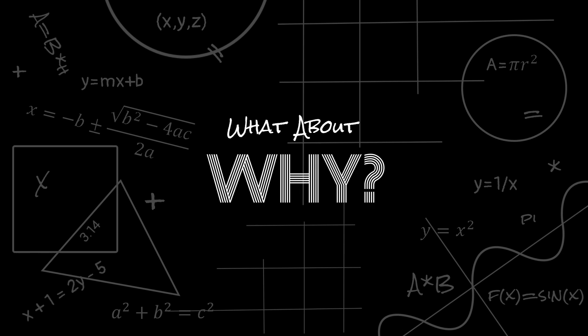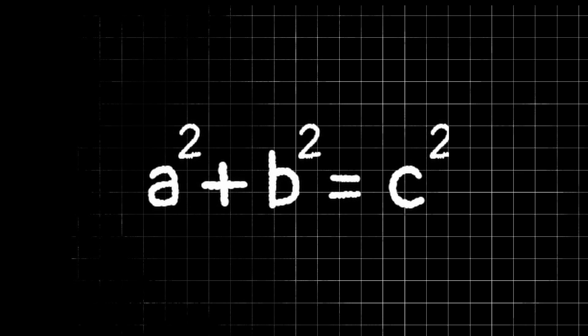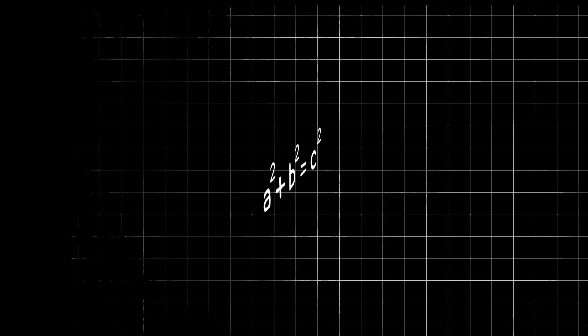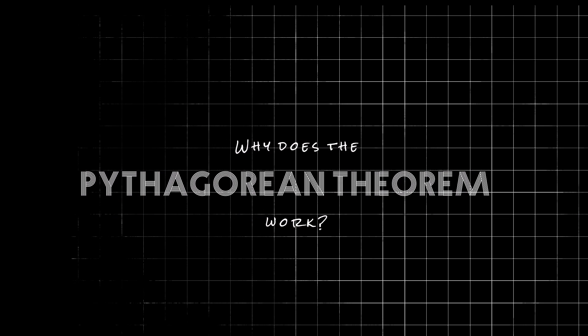In mathematics, we often solve for x, but what about y? Today, let's talk about why a squared plus b squared equals c squared, or in other words, why does the Pythagorean theorem work?